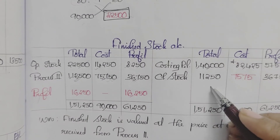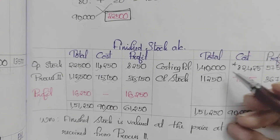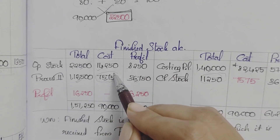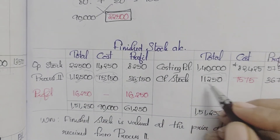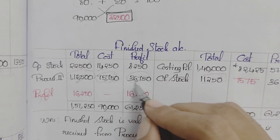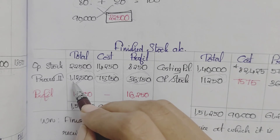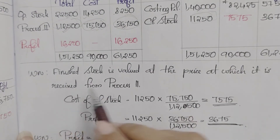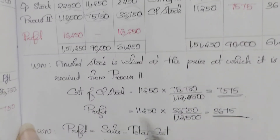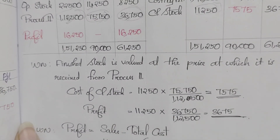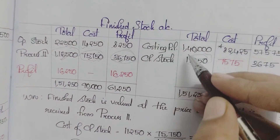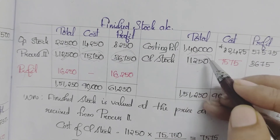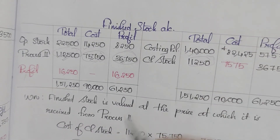Closing stock of finished goods is 11,250. Cost element = 11,250 × 75,750 ÷ 1,12,500. Profit element = 11,250 × 36,750 ÷ 1,12,500. Finished stock is valued at the price at which it is received from Process 2. Sales during the period are 1,40,000 on the credit side.